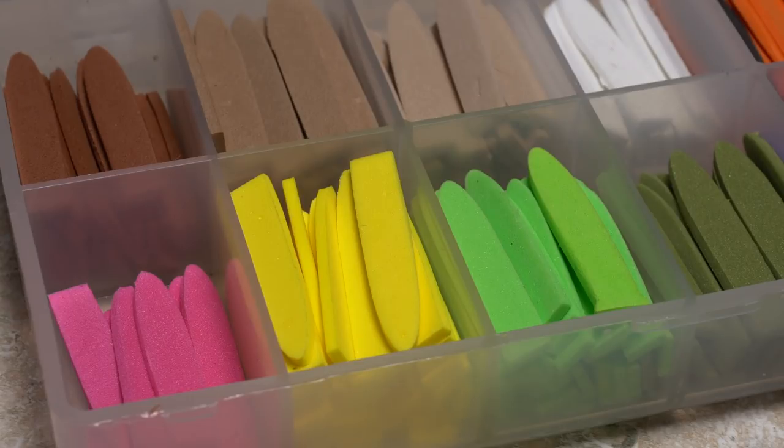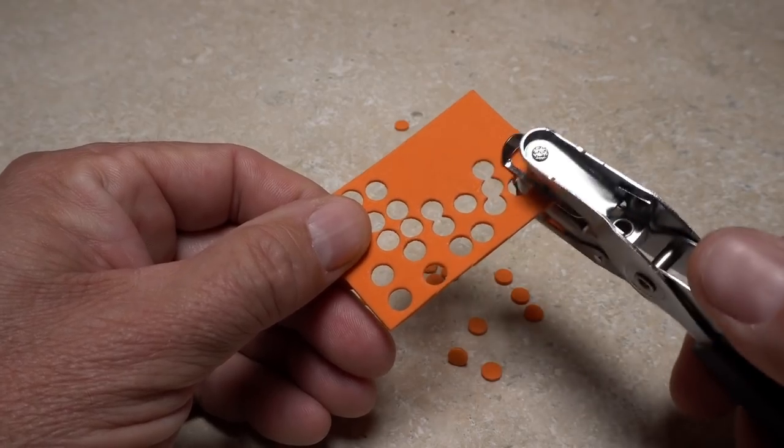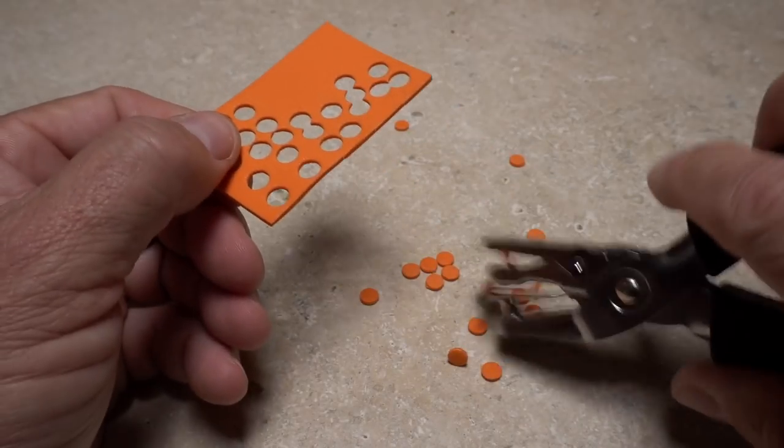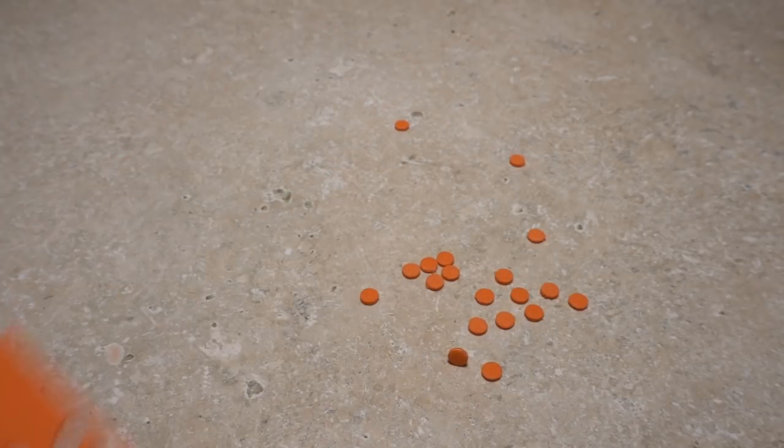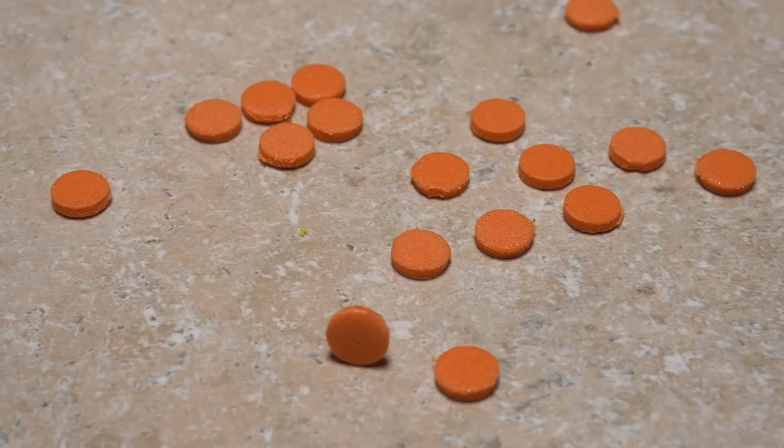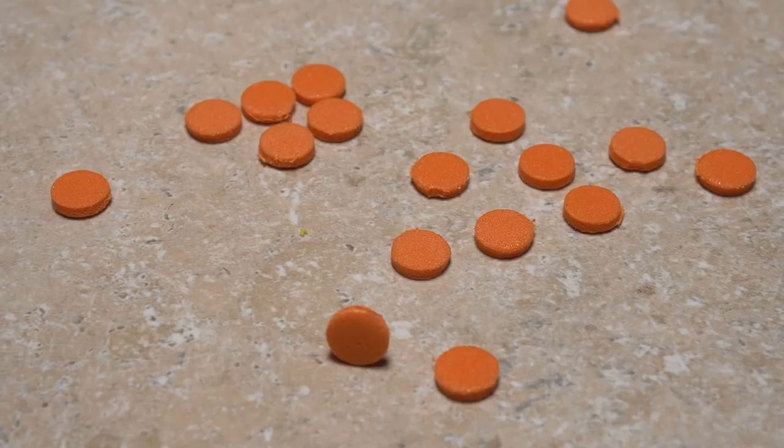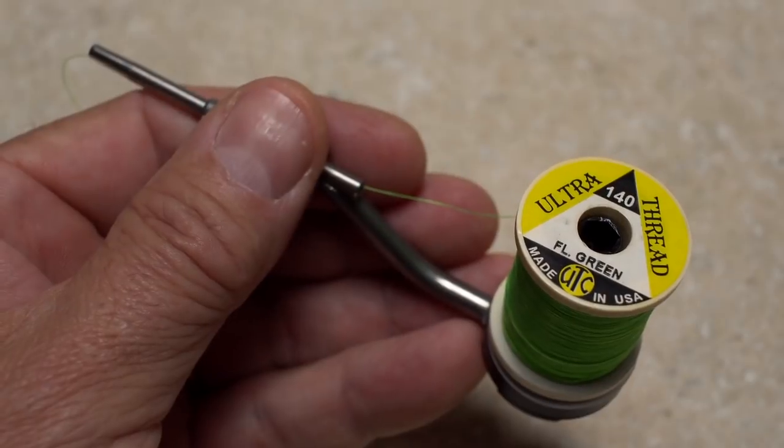A hole punch is another great tool to have, as it can produce hot spots or little indicator discs at a rapid rate. These too look more professional than those simply cut out with scissors. Attaching somewhat slick foam to a slippery metal hook can be a bit tricky.